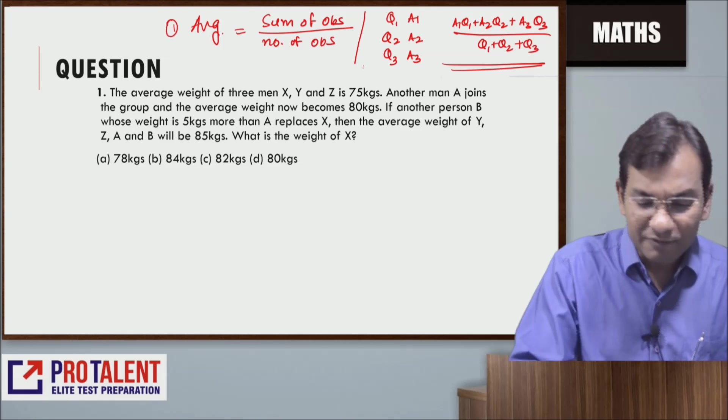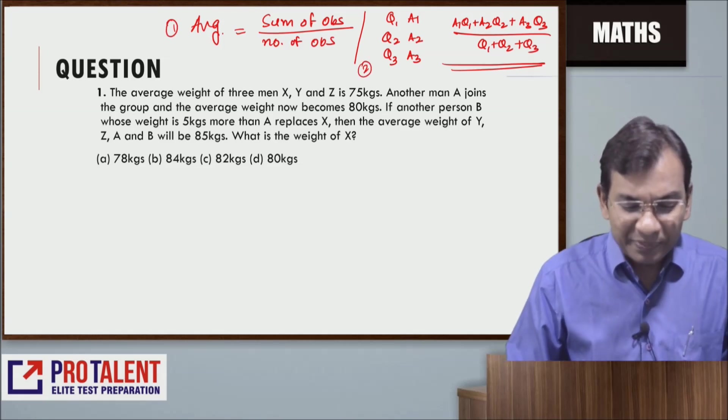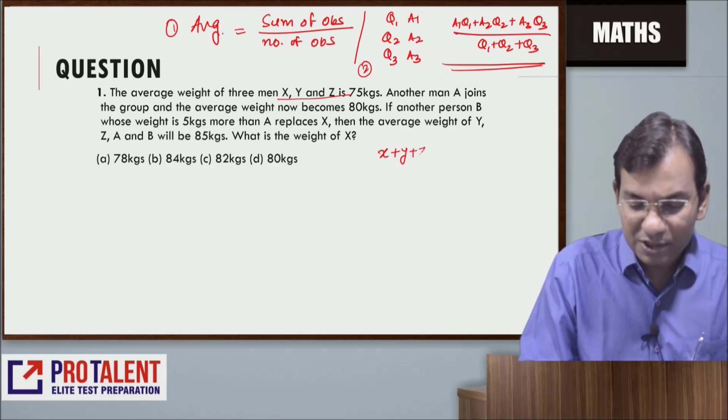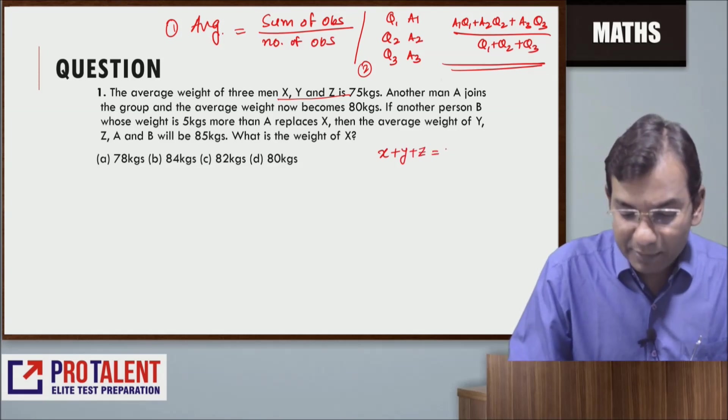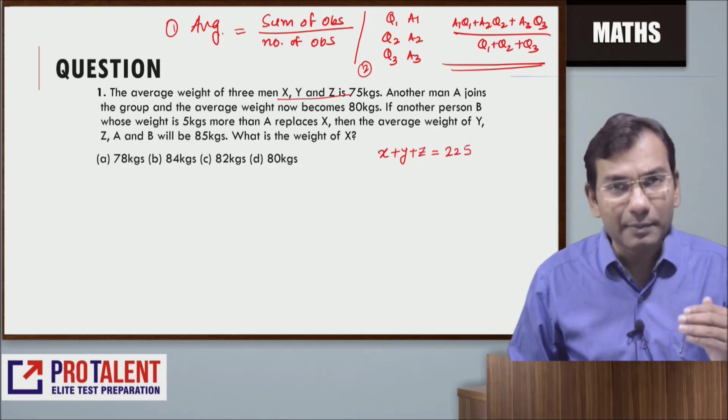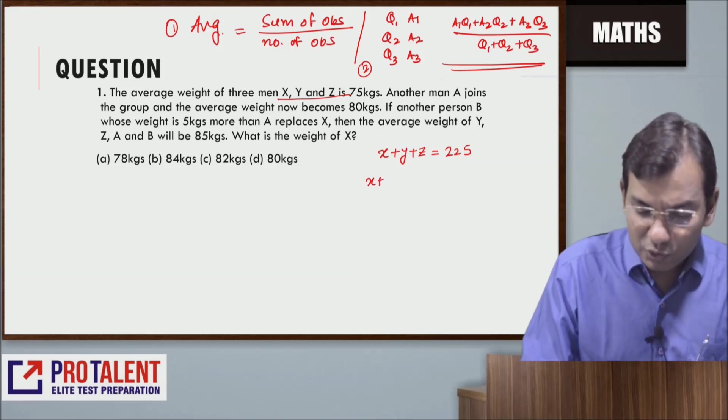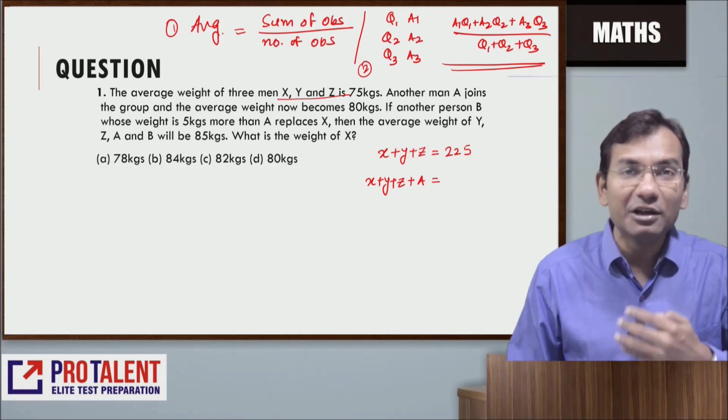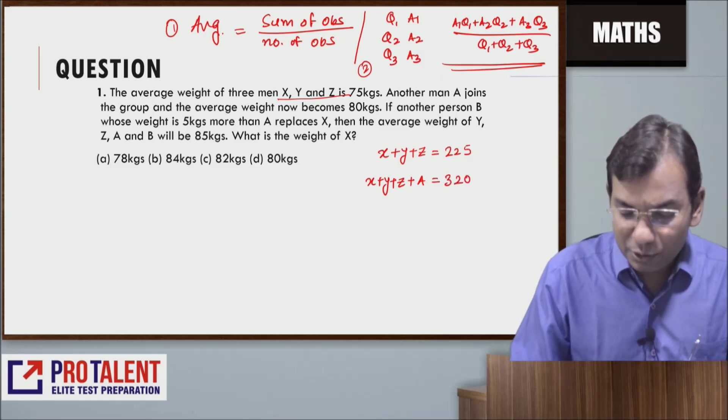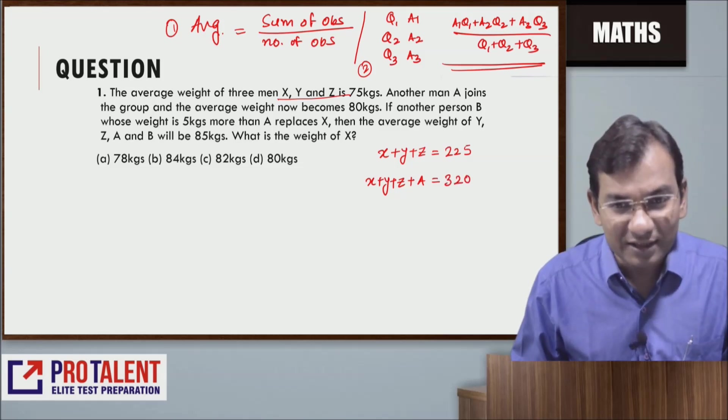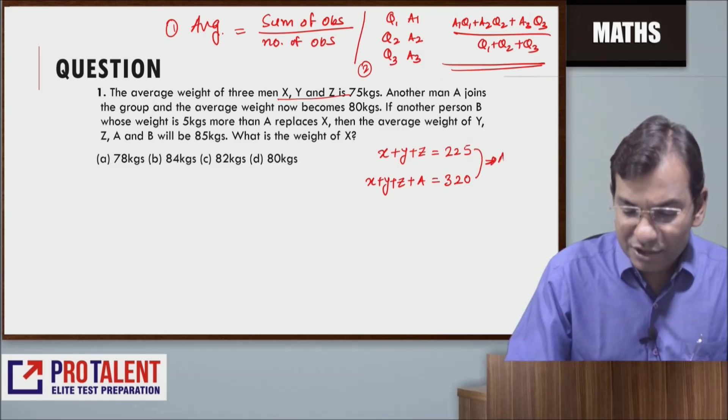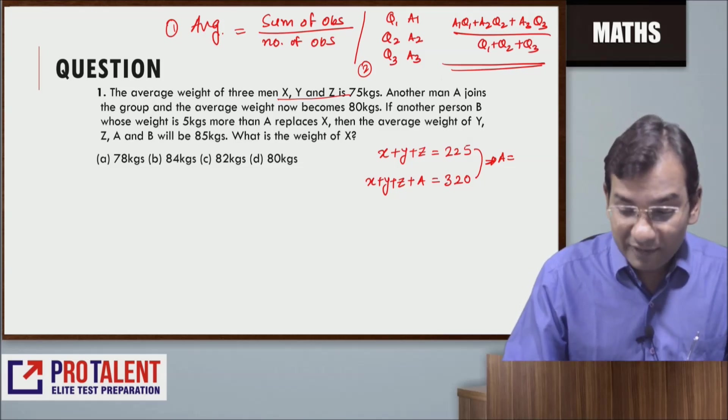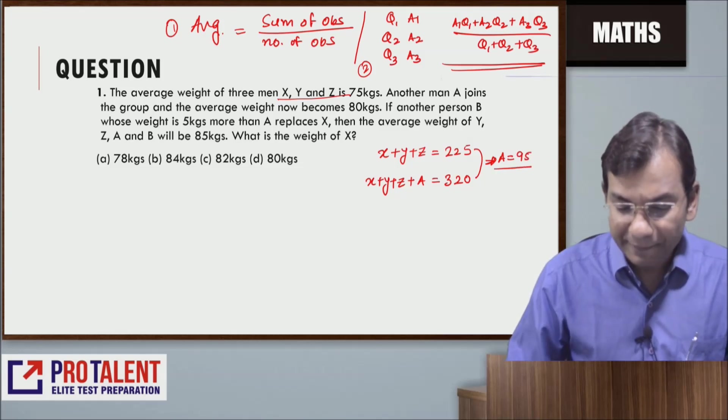Here's the first question: The average weight of three men X, Y, Z is 75 kg. So X + Y + Z equals 75 × 3, which makes it 225. Another man A joins the group and the average now becomes 80. So X + Y + Z + A equals 80 × 4, that's 320. From this I get a relationship for A.